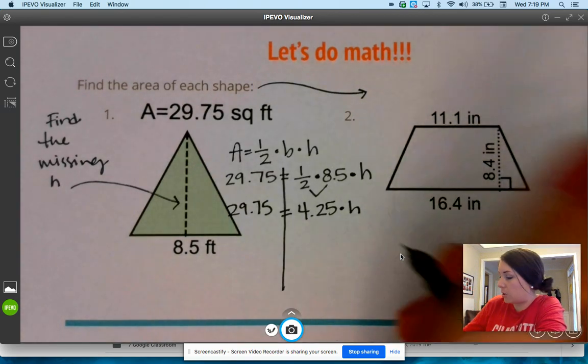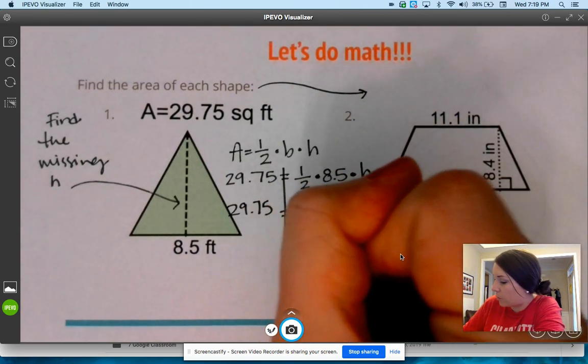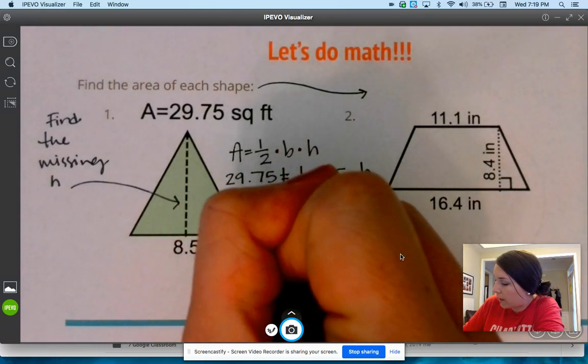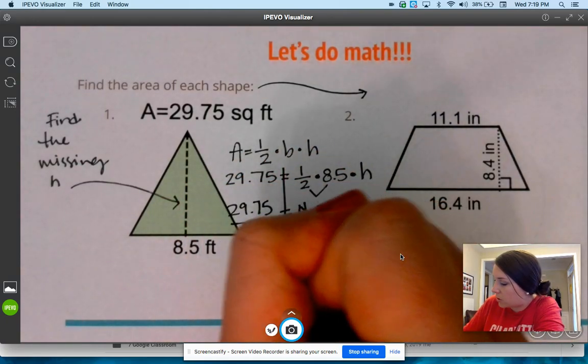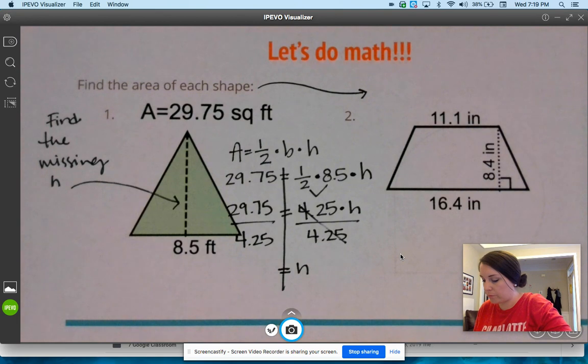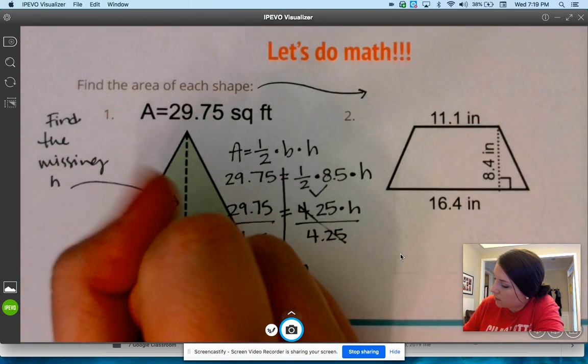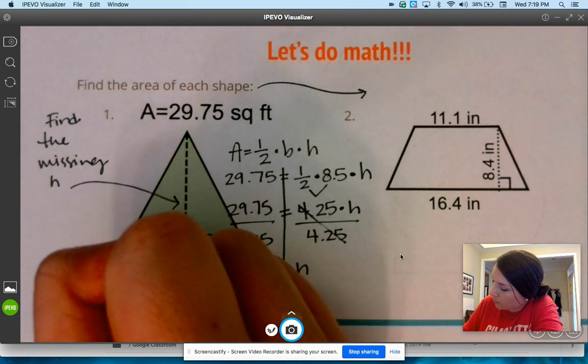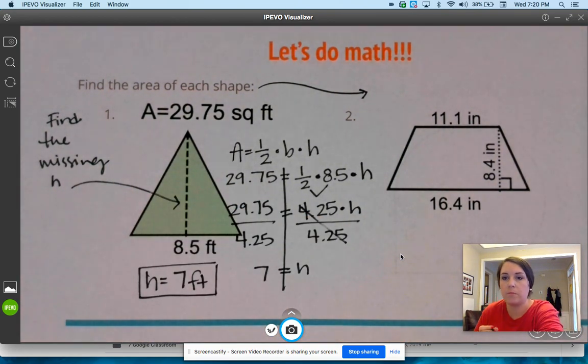And then the last step to get H all by itself, we're going to divide by 4.25. Divide by 4.25. We get H is equal to 7. So the height, 7 feet. I'm going to put a box around my answer.